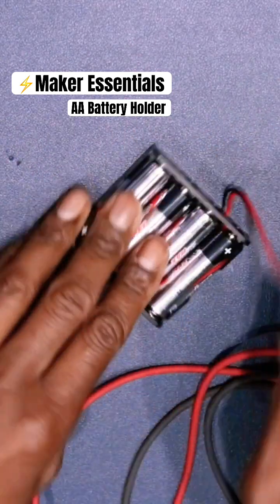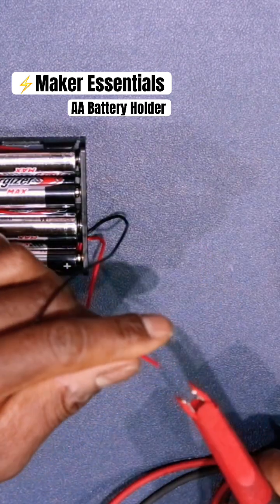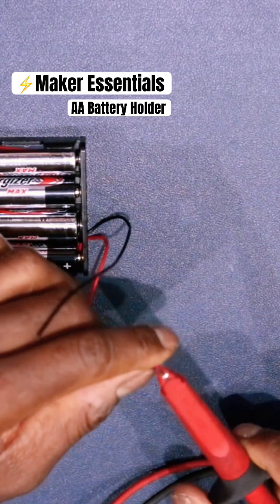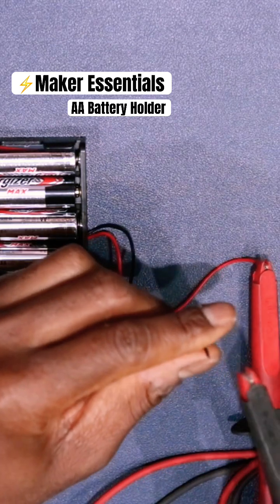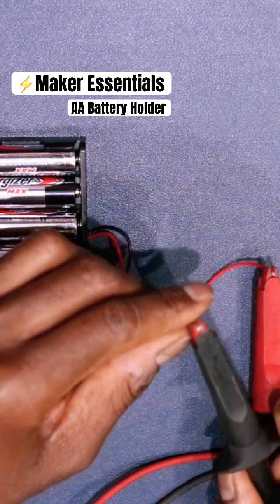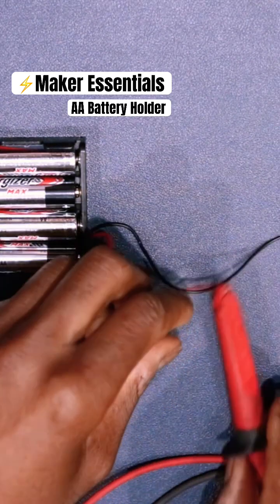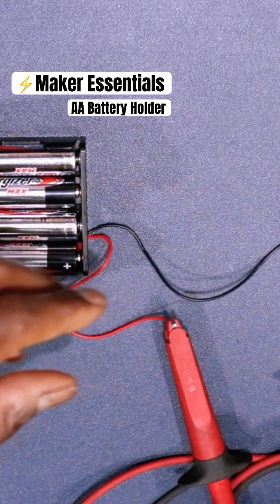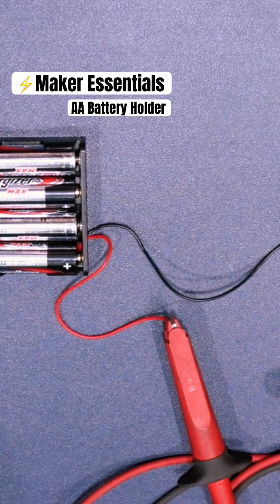I actually dropped it there and just to make sure everything was still intact, I hooked it up to a voltmeter to verify that all the contacts were being made and I got about 6.3 volts out of this pack, which is usually the standard for four AA batteries.